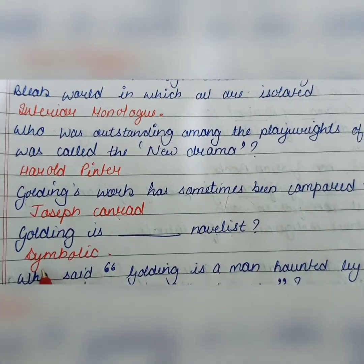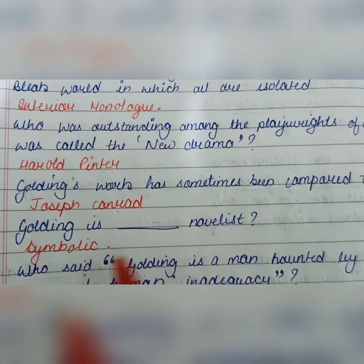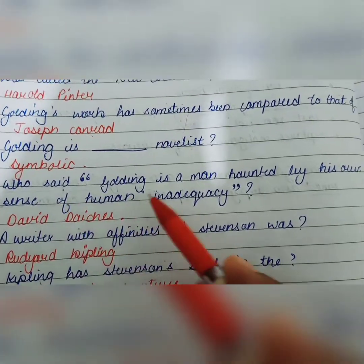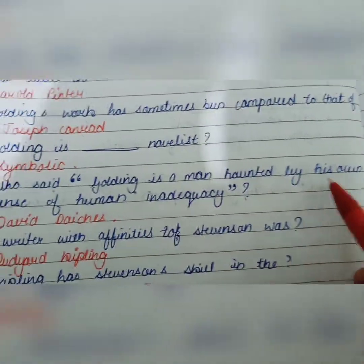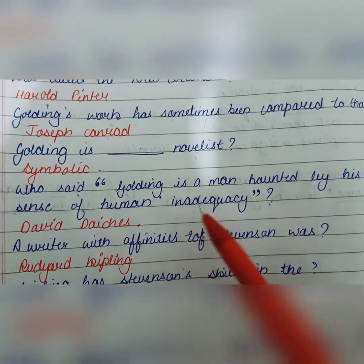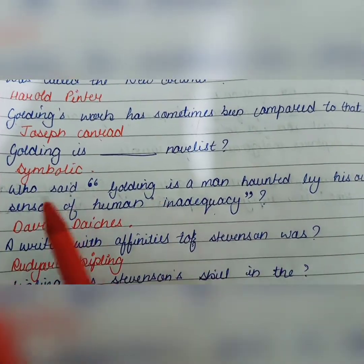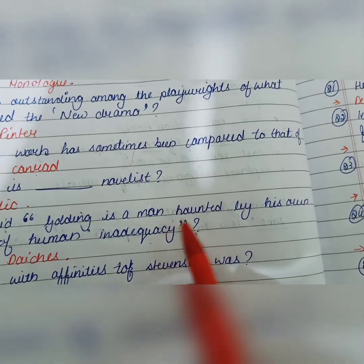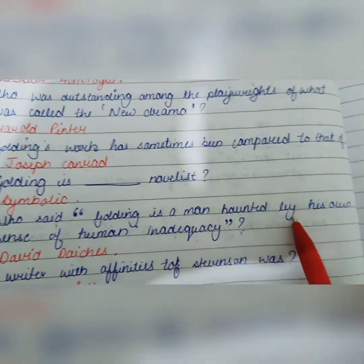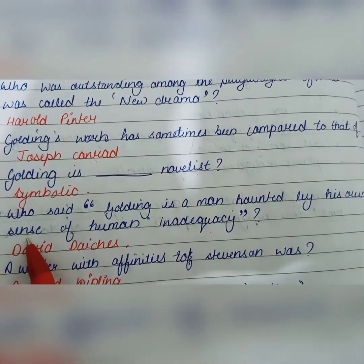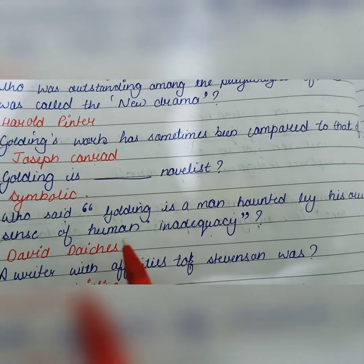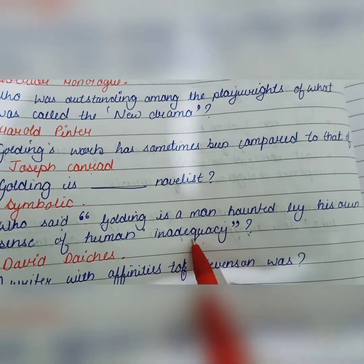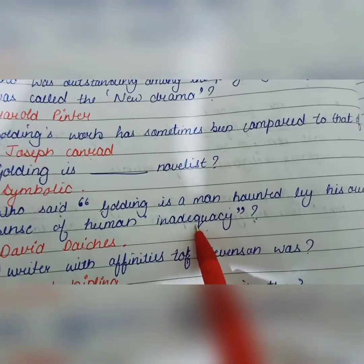Golding is a symbolic novelist. Who said 'Golding is a man haunted by his own sense of human adequacy'? That is David — referring to a writer who said that Golding is haunted by his own inner senses of human adequacy.